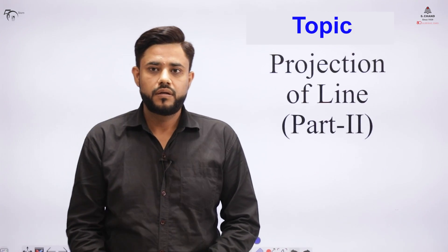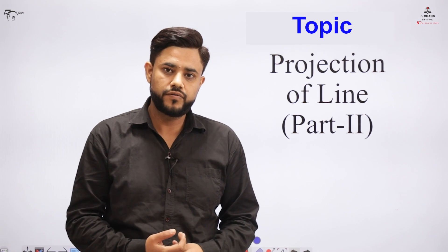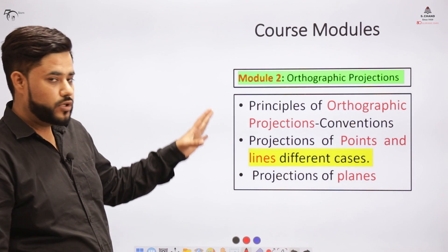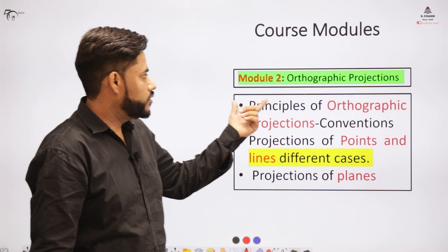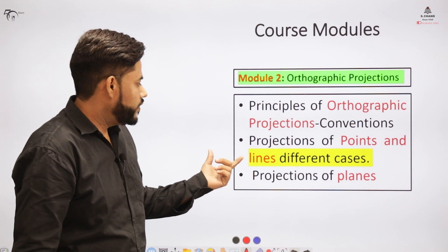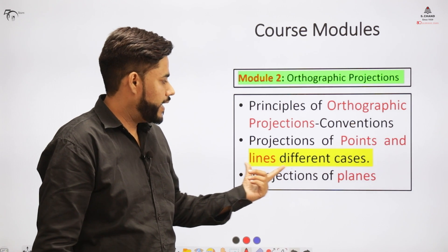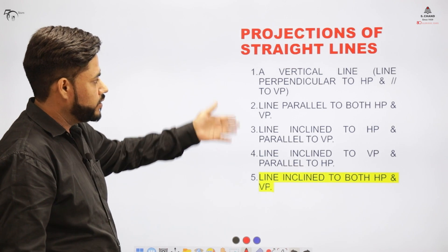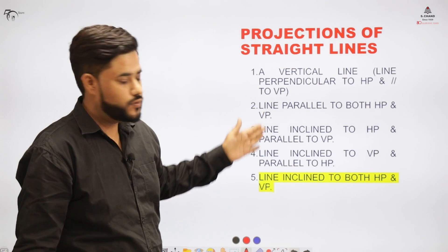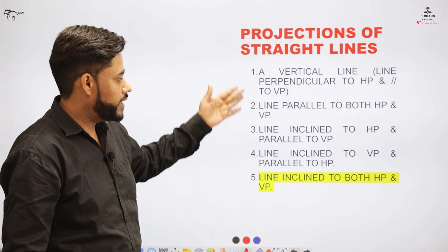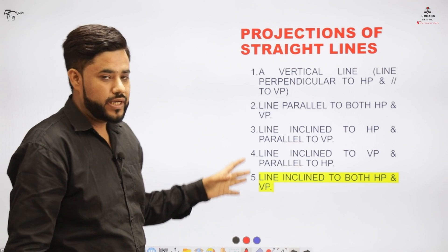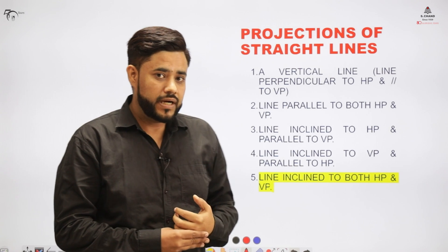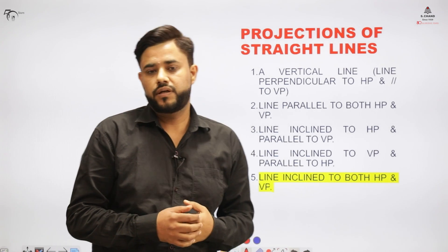We are covering the projection of line — this is the second part of the video. The contents covered are related to course module number 2, which is orthographic projection, specifically the topic of projection of lines — different cases. In this fifth category, the line is inclined to both the horizontal plane and the vertical plane.